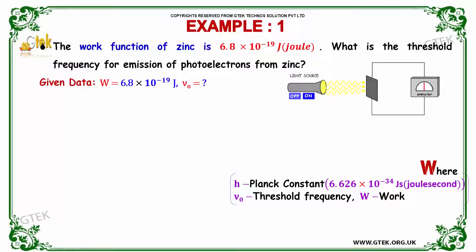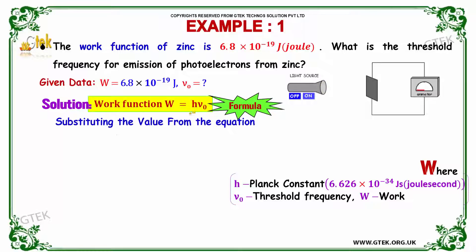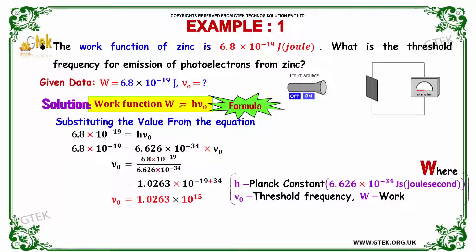The given value is W, the work function, which is 6.8 × 10⁻¹⁹ Joule. We need to find ν₀. As you know, the formula is W = h × ν₀. Substituting the value of W in this equation: 6.8 × 10⁻¹⁹ = h × ν₀.